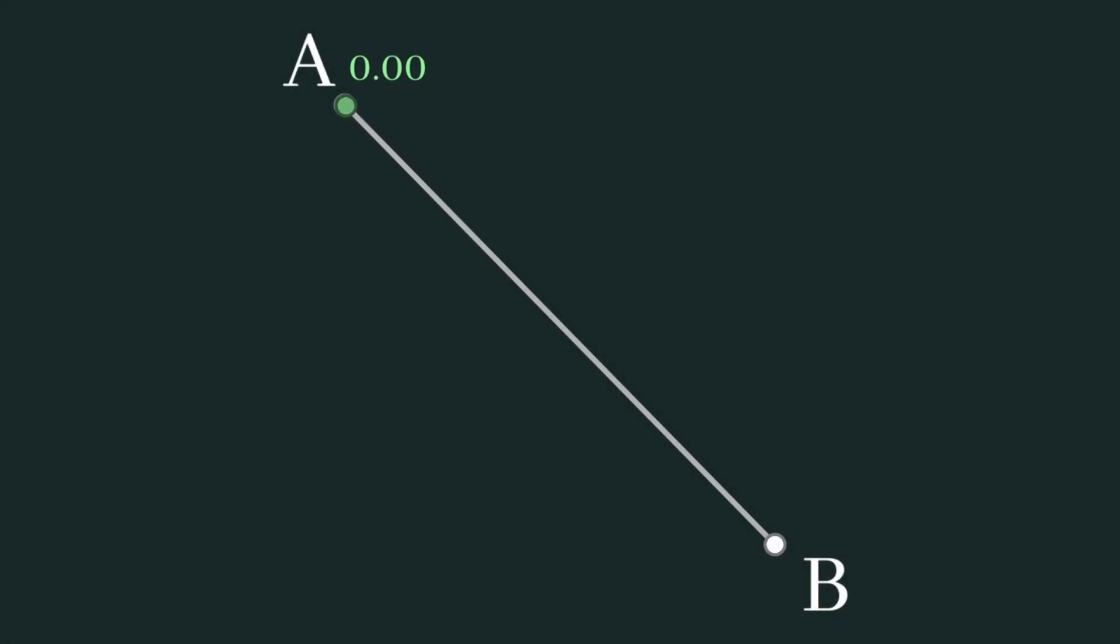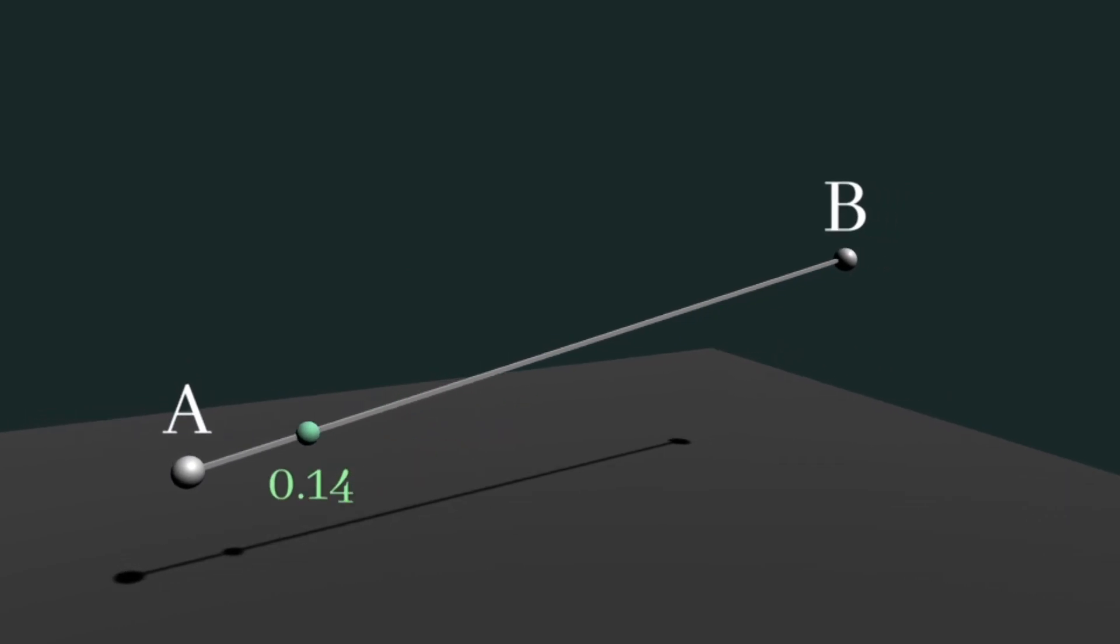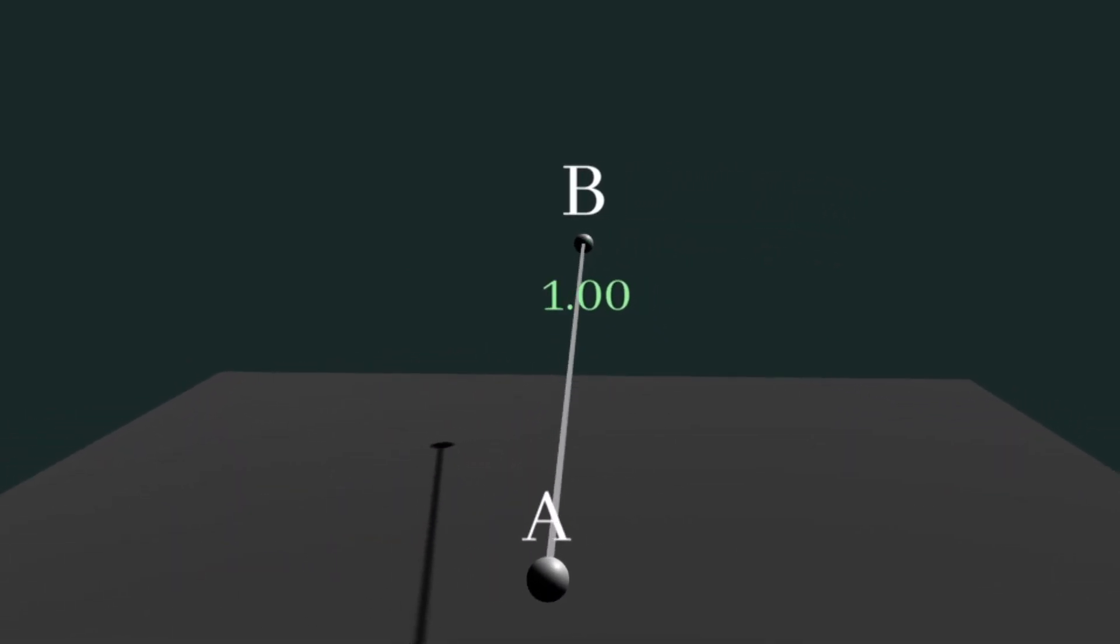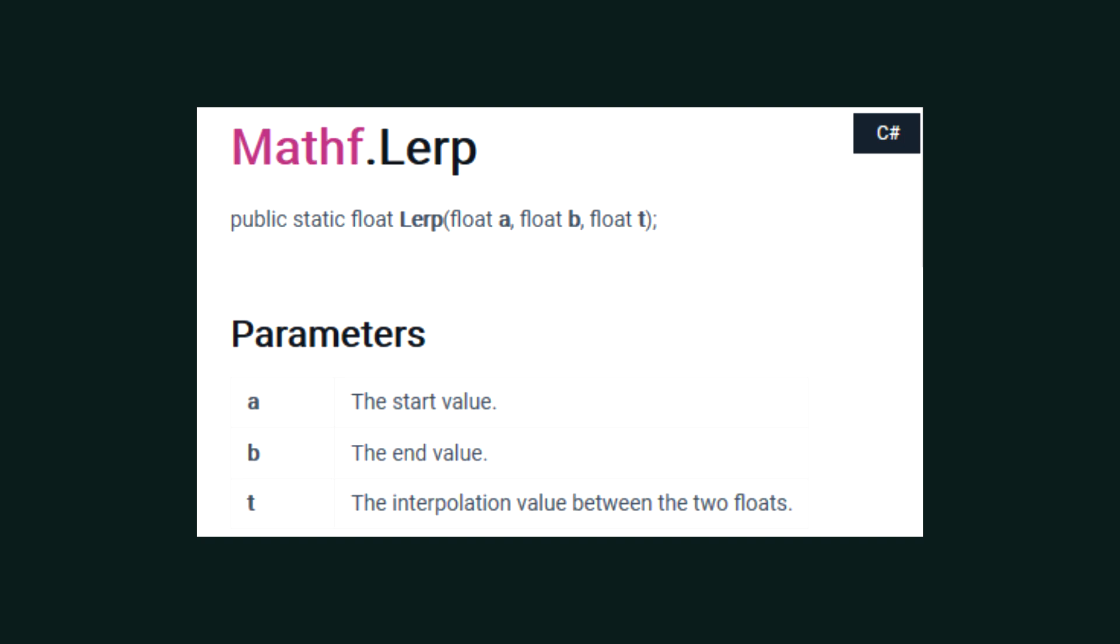So at this point, you should have a fairly good idea of what a lurp does. But how is it calculated under the hood? To answer this question, we're going to talk about the simplest form of lurp in Unity, that being mathf.lerp. Compared to vector2 and vector3.lerp, this is essentially the one-dimensional variation of that. In other words, it lurps between normal float numbers.